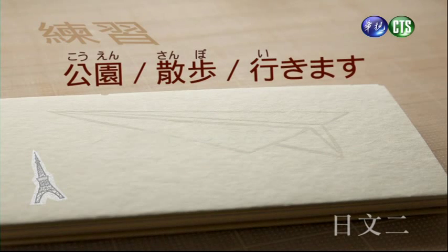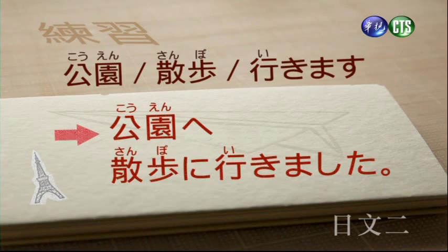公園、散歩、行きます，會變成：公園へ散歩に行きました（去公園散步）。以上講到的是三行動詞，直接可以用動作性名詞加上に，再加上移動性動詞，來表示動作的目的，這是最簡單的方式。接下來要看的是第四個句型。